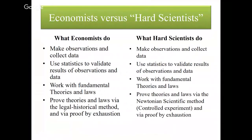That's the best definition I've ever found. Now I always start off by saying that economists are scientists. We are behavioral scientists, but we are scientists nonetheless. Like physical scientists, we make observations and collect data. We use statistics to validate the results of observations and data. We work with fundamental theories and laws. However, behavioral scientists use different methodologies to prove or disprove things. The Newtonian scientific method and proof by simulation exhaustion is used in the physical sciences, whereas the legal historical method is also used.